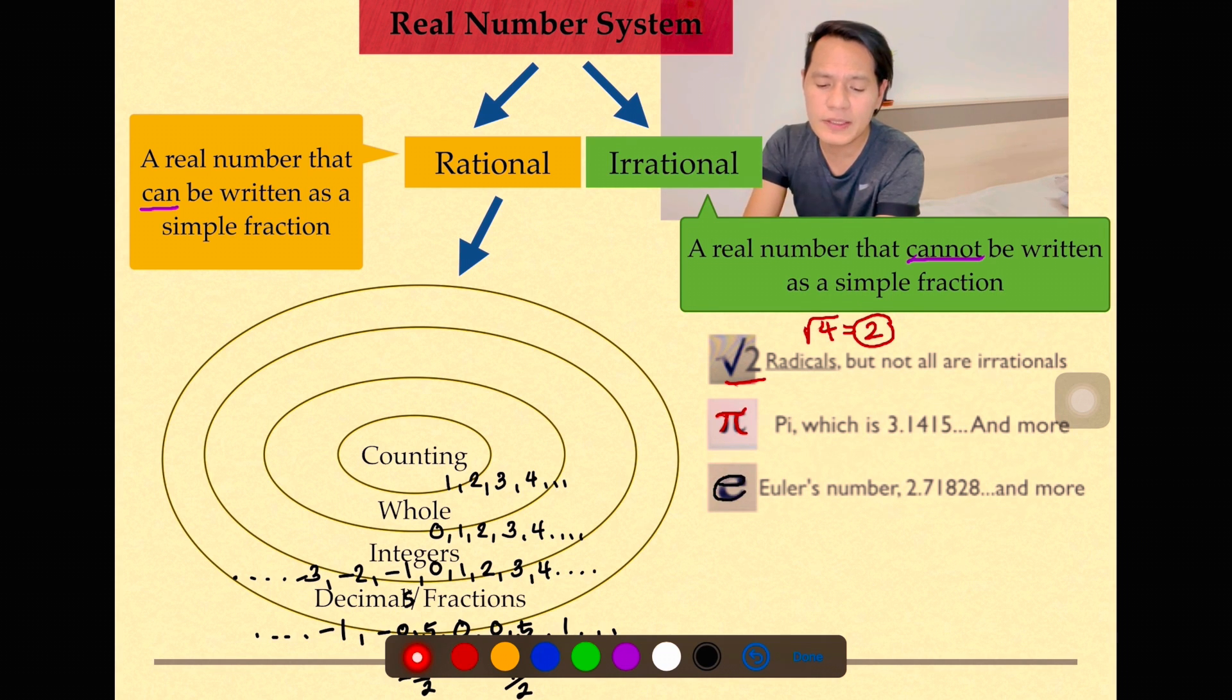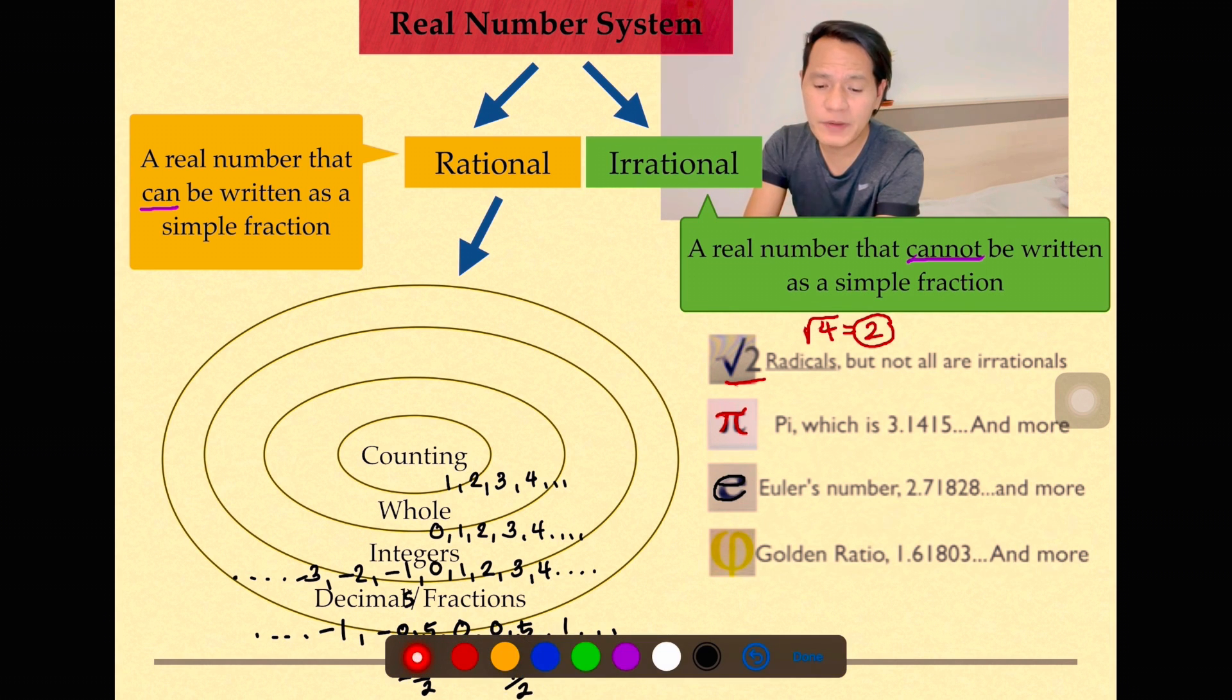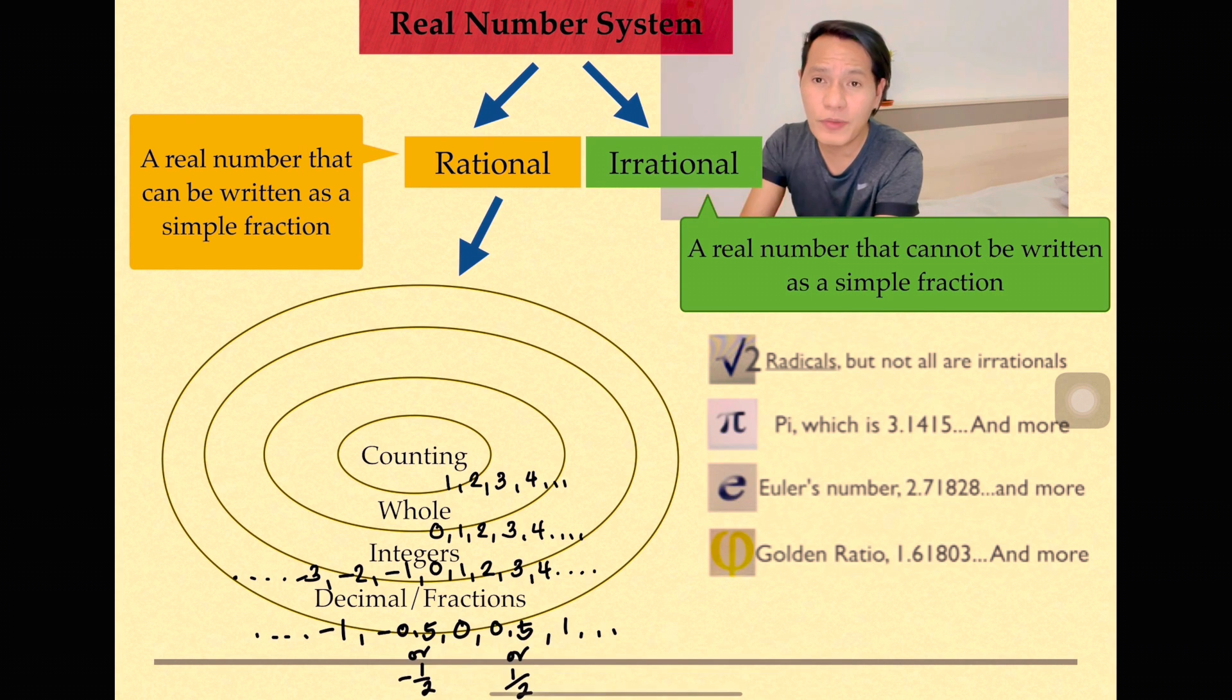And another thing here is the golden ratio. These are specific numbers which are assigned to particular symbols or notations. Basically, you will be encountering this as you go further in studying mathematics. But for now, let's just familiarize ourselves that these are the notations and symbols that you may encounter. These are actually considered as irrational numbers.